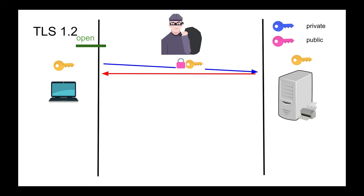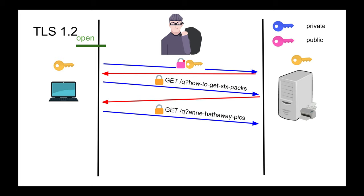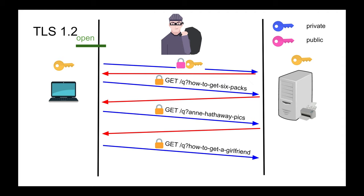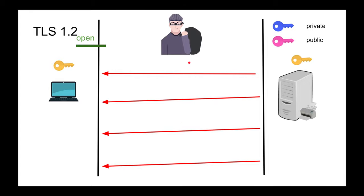So this attacker is smart. They just record everything into a file and wait — storing your encrypted searches, your encrypted messages, all of it — even though they currently can't read any of it because they don't have the private key.